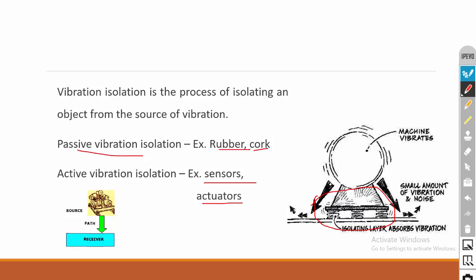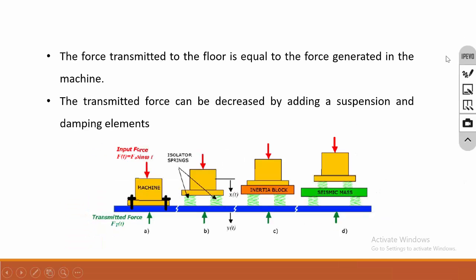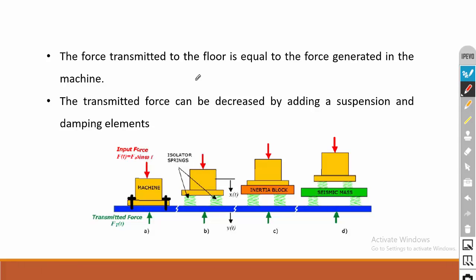We are controlling the vibration at its source because we are isolating the source — this is called vibration isolation. The force transmitted to the floor equals the force generated in the machine if there is no isolation. If 1000 N of force is generated and there is no isolator, the same amount of force is transmitted to the floor, which will vibrate and damage the floor.